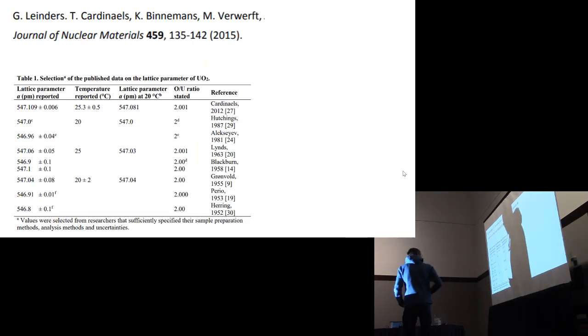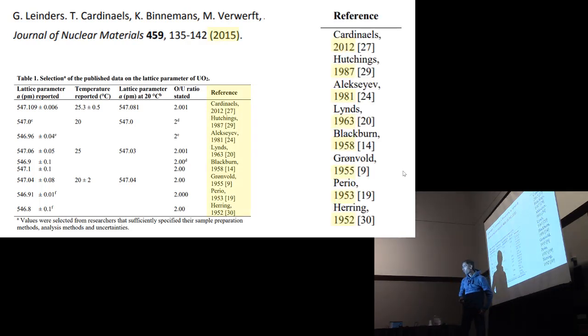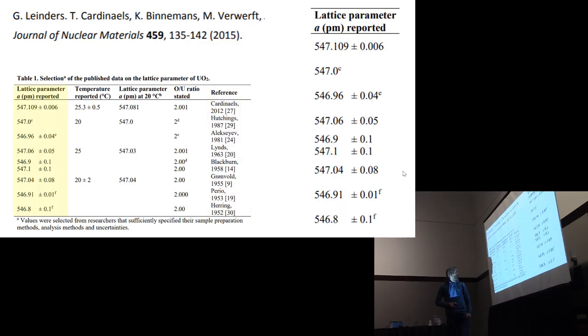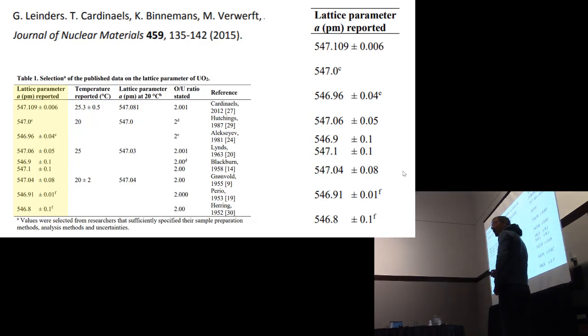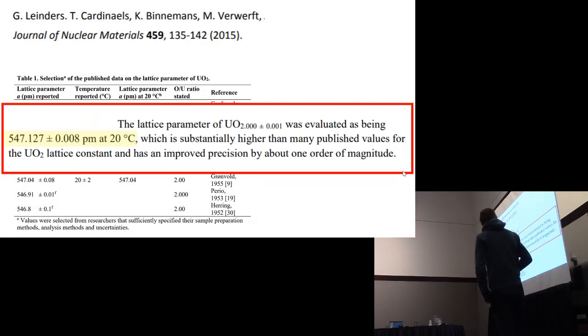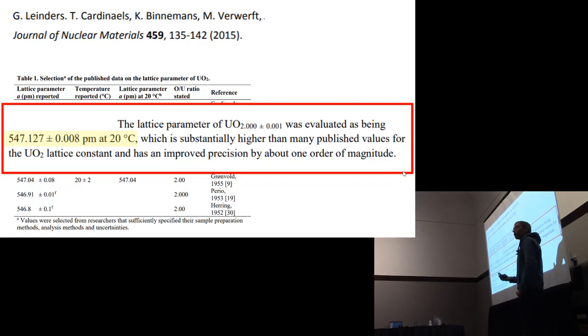In the literature you find fairly recent papers from 2015 with overviews of this lattice parameter as a function of year of measurement. If we look at these data, you see many numbers not too far away from each other with error bars. The people who publish this paper do their own very precise X-ray diffraction experiment and conclude that they find this lattice parameter at this temperature with this error bar, an order of magnitude smaller than what was available before.